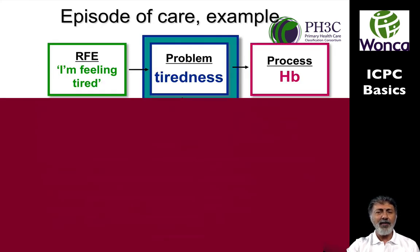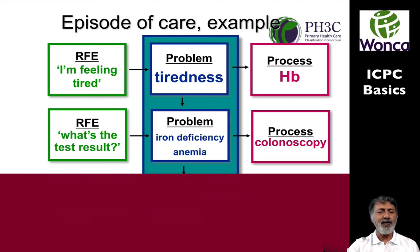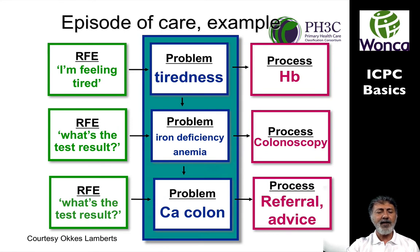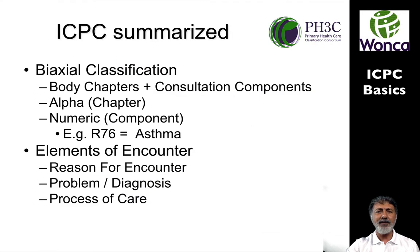An example of this complexity: a patient comes in saying they're feeling tired — that's the reason for encounter. You decide the problem is just tiredness, and you send them off to get a full blood picture done — that's the process of care. The patient comes back wanting their test result; you see iron deficiency anemia. You then do the next step — a colonoscopy. The third time the patient comes in, you see they've got a cancer of the colon, and you set in motion a process of referral and advice. If you're collecting data per encounter and you link this episode of care, you can unpack a lot of complexity into different reasons for encounter and problem sets.